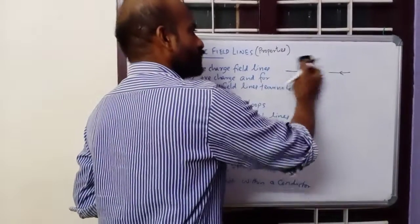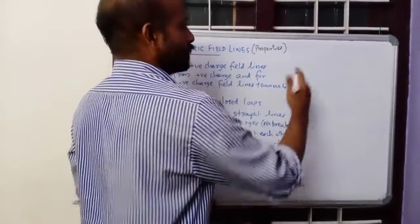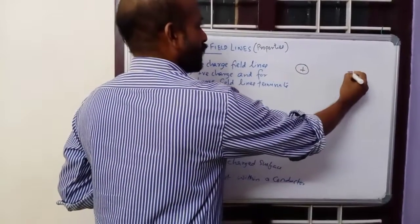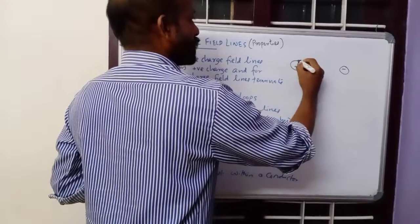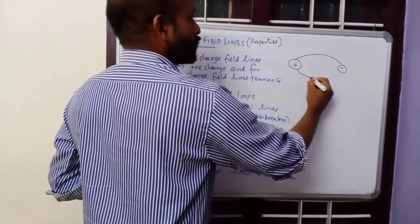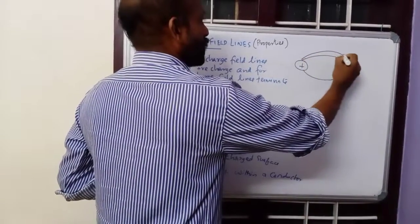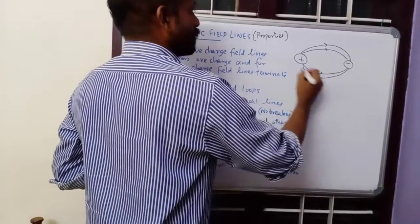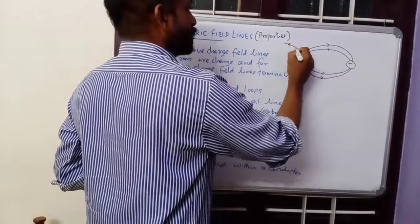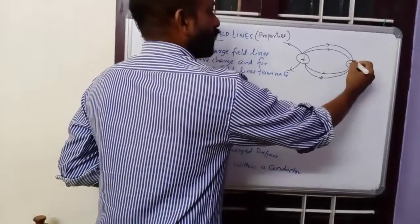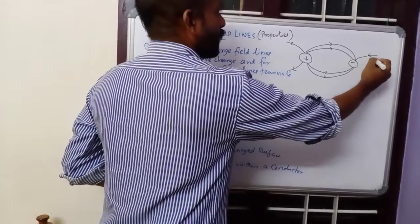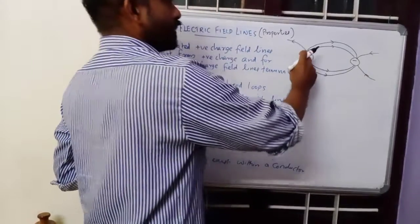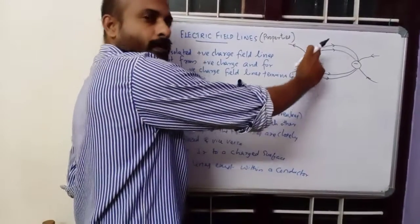If you have a positive and negative charge together, you can draw the field lines going from positive to negative like this. Here you can see field lines going outward from the positive charge and coming in toward the negative charge. These are for a system of one positive and one negative charge.